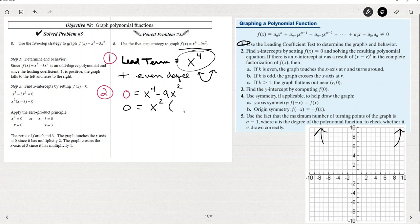I'm going to factor the GCF x squared. X to the fourth divided by x squared is x squared. Negative nine x squared divided by x squared is negative nine. And then I see that I've got the difference of two squares. So this x squared minus nine factors to x minus three x plus three.